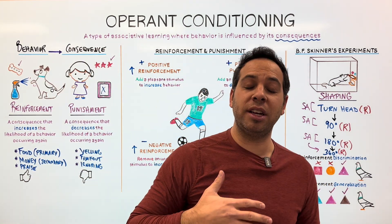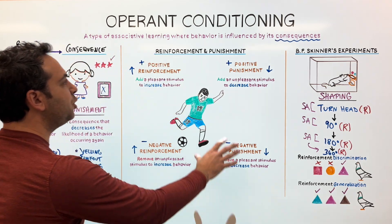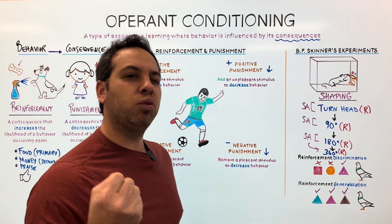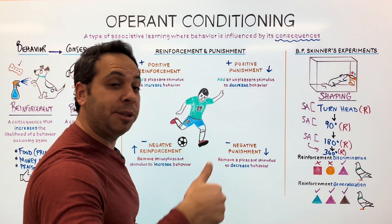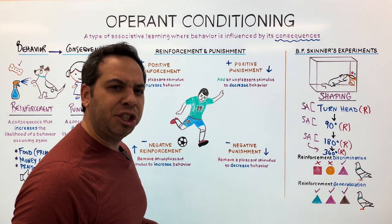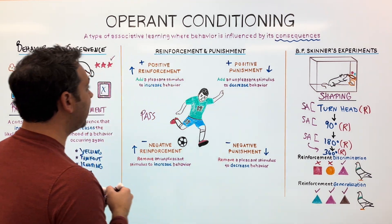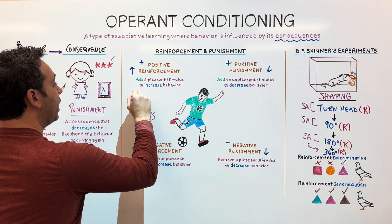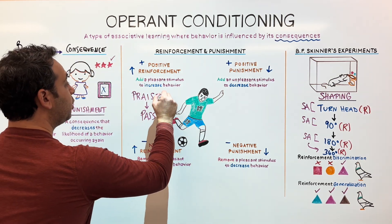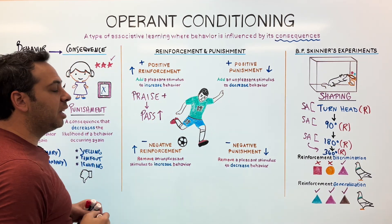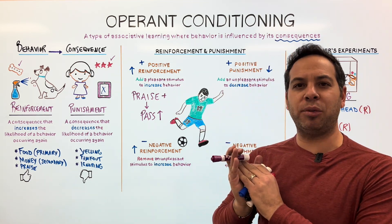Here's our scenario: I'm a coach of a soccer team, and I want to make sure my player does really well on the field. He's really trying hard during practice. The first thing I could do is use positive reinforcement — add a pleasant stimulus to increase behavior. Our player normally does a lot of shooting, but in one practice he does a lot of passing. So I'm going to praise him, which makes sure he continues to pass. I add the praise, which makes him more likely to pass. This is positive reinforcement — I'm positively reinforcing his passing through the use of praise. I'm adding something to the situation.